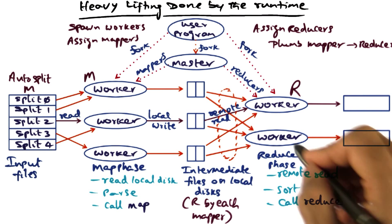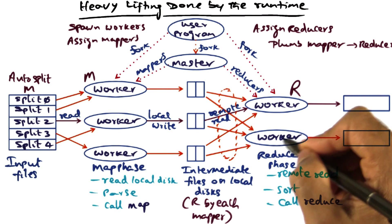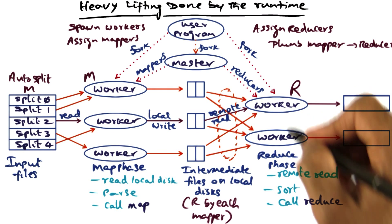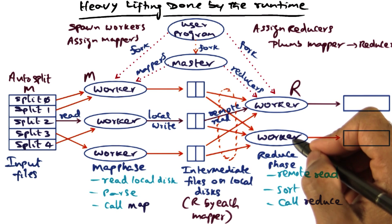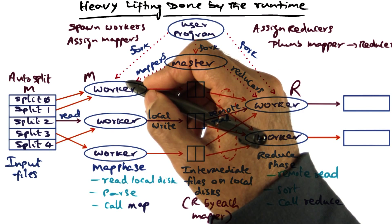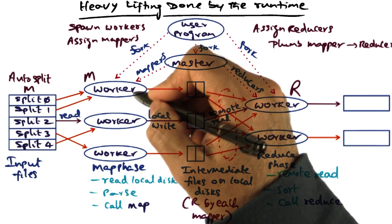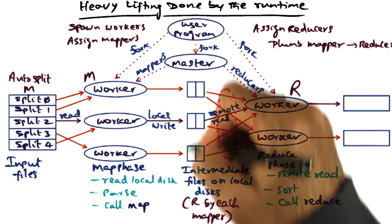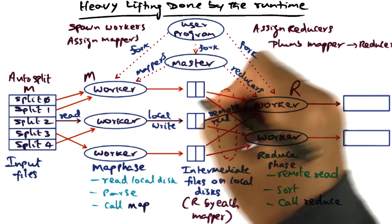In the reduce phase, there is more work to be done in pulling the data that is needed for each one of these reducers. Because we know that the mappers have been executing on different nodes of the computational cluster, and they produce their intermediate results as files on their local disk.